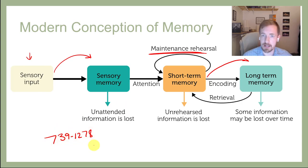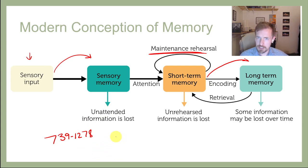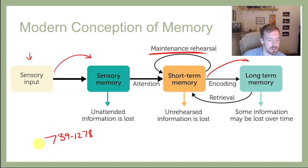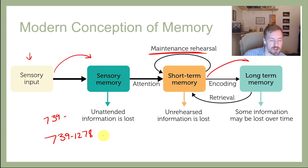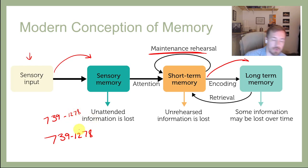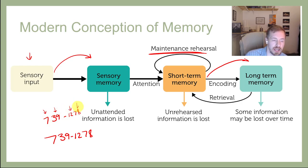Another way is to make the information salient and vivid. For example, with 739-1278: 7 is my favorite number, 39 is how old my sister is, 12 is a dozen, and 78 is when my mom was born. So whenever I need to think of this number I remember my lucky number, how old my sister is, a dozen, and my mom's birth year. Then it's super easy to remember and you probably won't forget it when you store it that way.